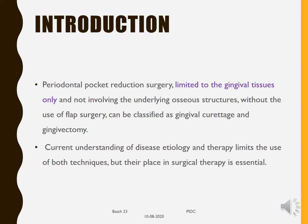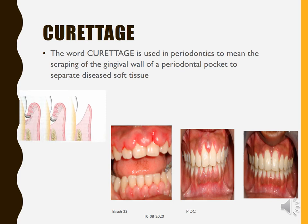Periodontal pocket reduction surgery limited to the gingival tissues only — those not involving the underlying osseous structures without the use of flap surgeries — can be classified as gingival curettage and gingivectomy. Current understanding of disease etiology and therapy limits the use of both techniques, but their place in surgical therapy is essential. We will start with the first procedure: curettage.